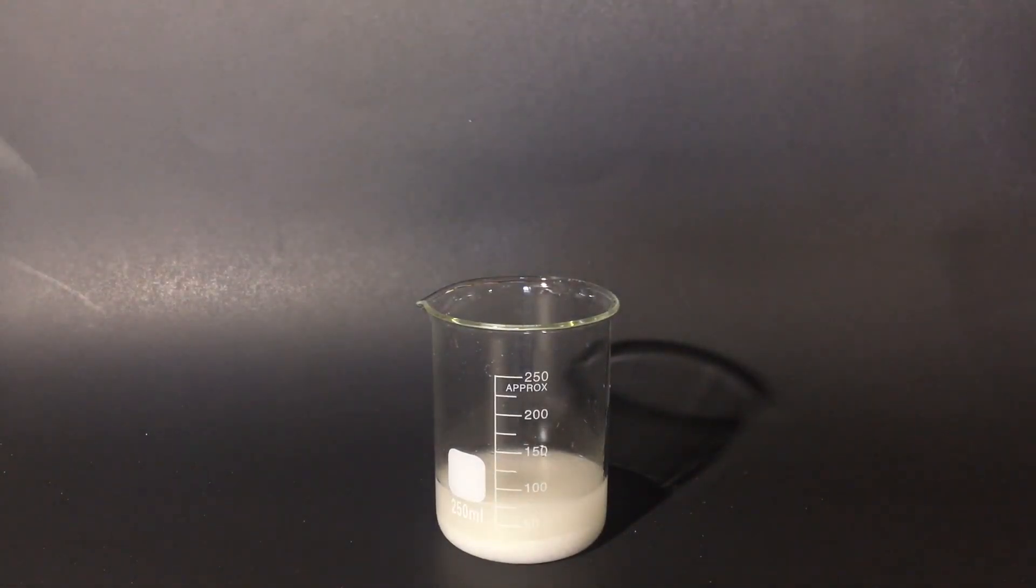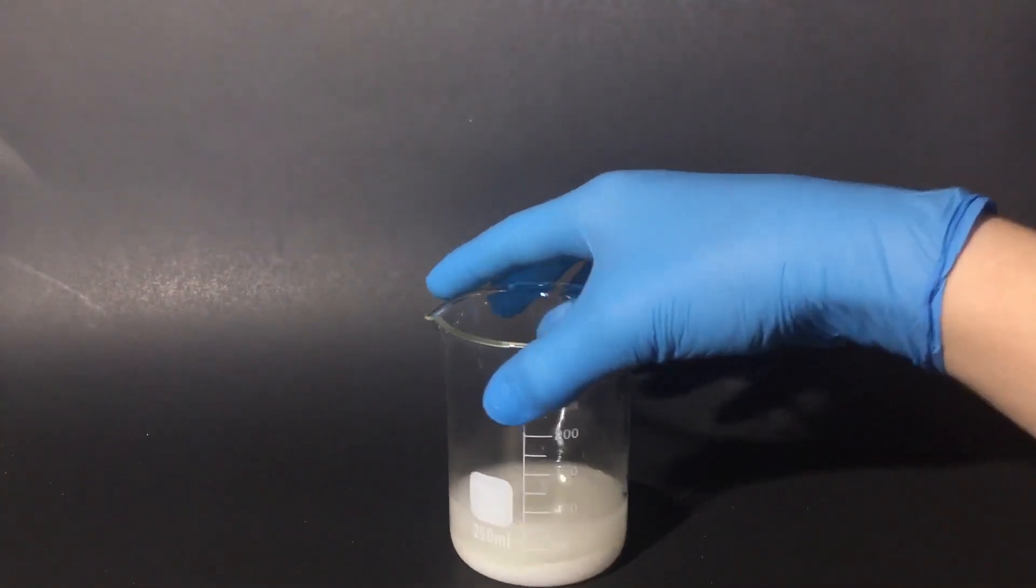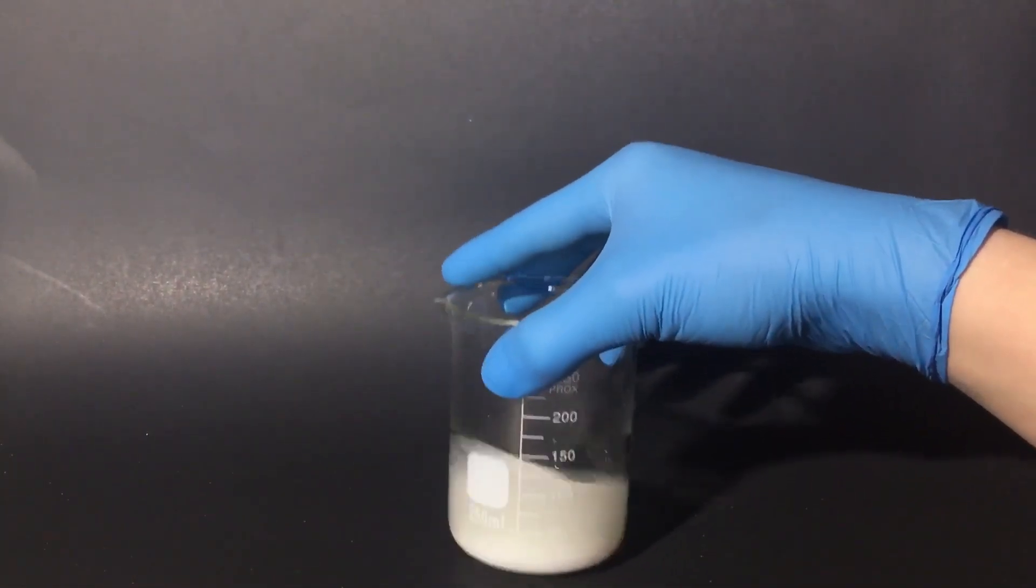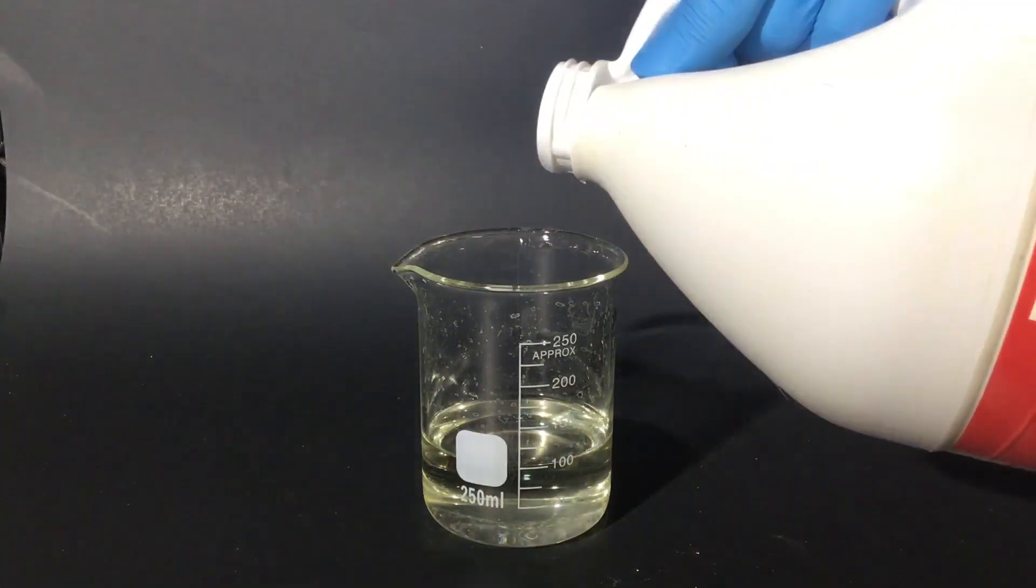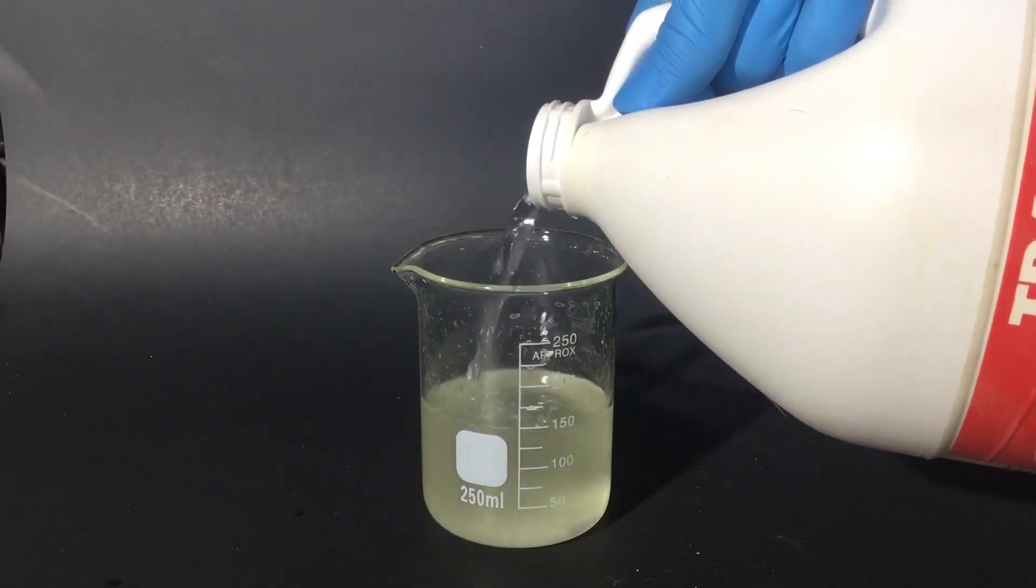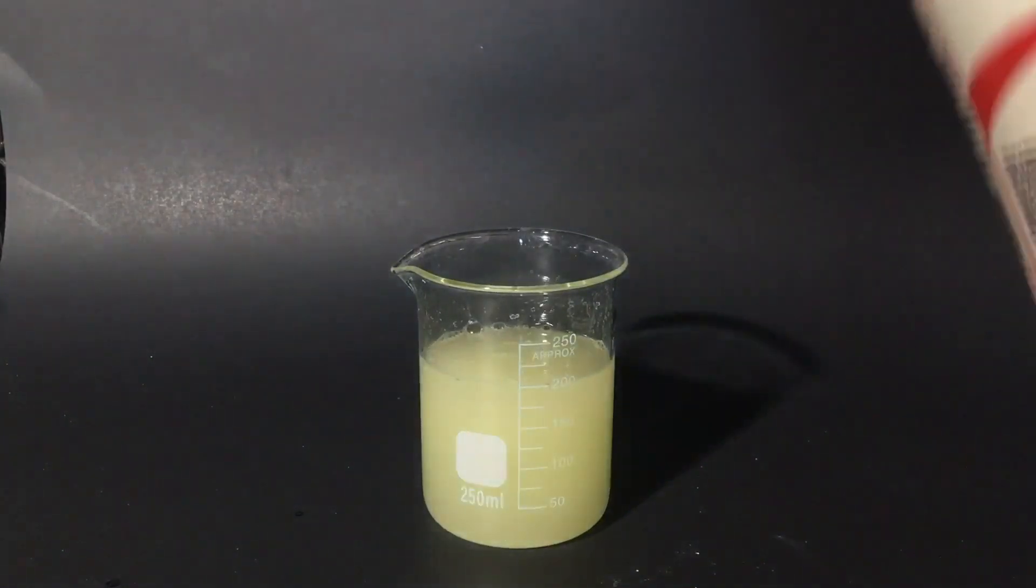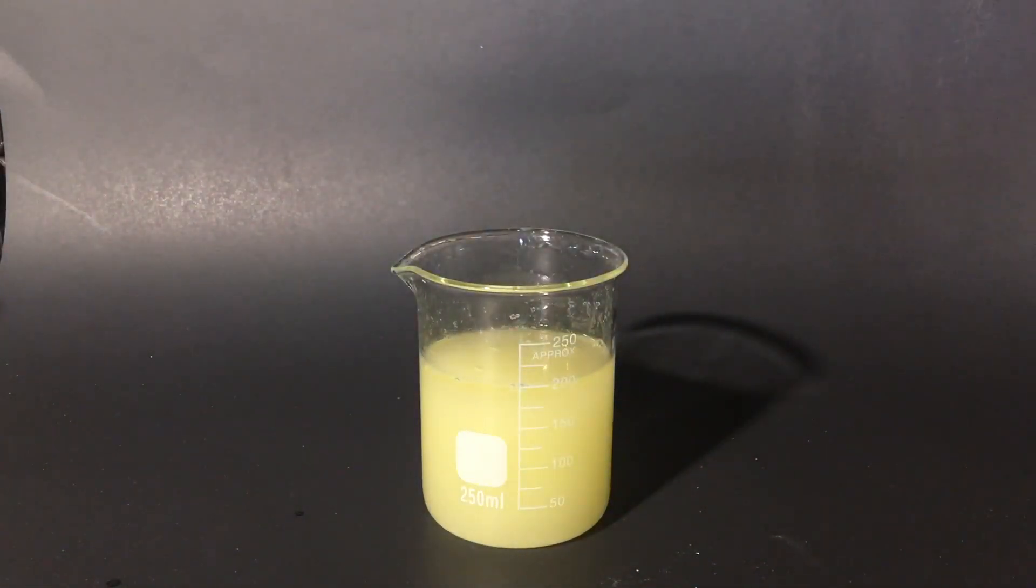Now, I just need to wait for it to all dissolve, and I make sure to swirl it around. After it dissolves, I add in hydrochloric acid. This reacts with the potassium iodide to make potassium chloride, and I believe hydrogen gas is liberated in the process.